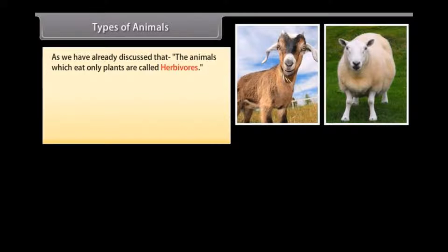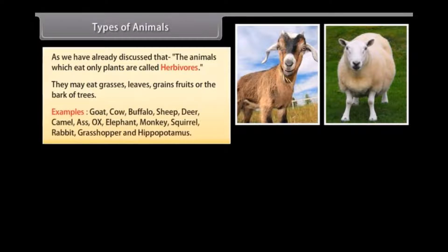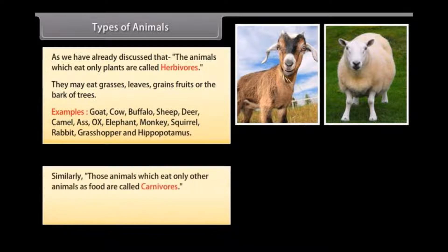Animals which eat only plants are called herbivores. They eat grasses, leaves, grains, fruits, or the bark of trees. Examples include: goat, cow, buffalo, sheep, deer, camel, ass, ox, elephant, monkey, squirrel, rabbit, grasshopper, and hippopotamus.